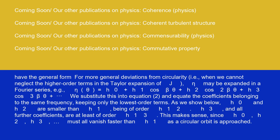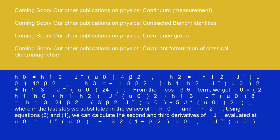For more general deviations from circularity, i.e., when we cannot neglect the higher order terms in the Taylor expansion of J, η may be expanded in a Fourier series, e.g., η(θ) equals h₀ plus h₁ cos(βθ) plus h₂ cos(2βθ) plus h₃ cos(3βθ) plus midline horizontal ellipsis. We substitute this into equation 2, and equate the coefficients belonging to the same frequency, keeping only the lowest order terms. As we show below, h₀ and h₂ are smaller than h₁, being of order h₁². h₃, and all further coefficients, are at least of order h₁³. This makes sense since h₀, h₂, h₃ must all vanish faster than h₁ as a circular orbit is approached.